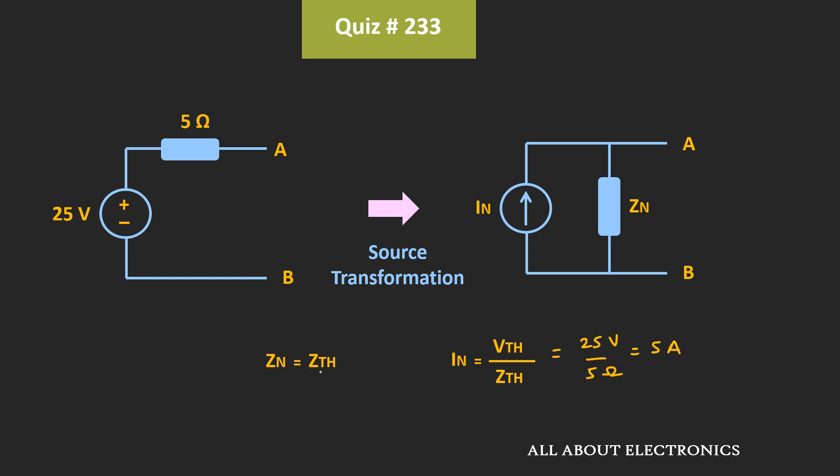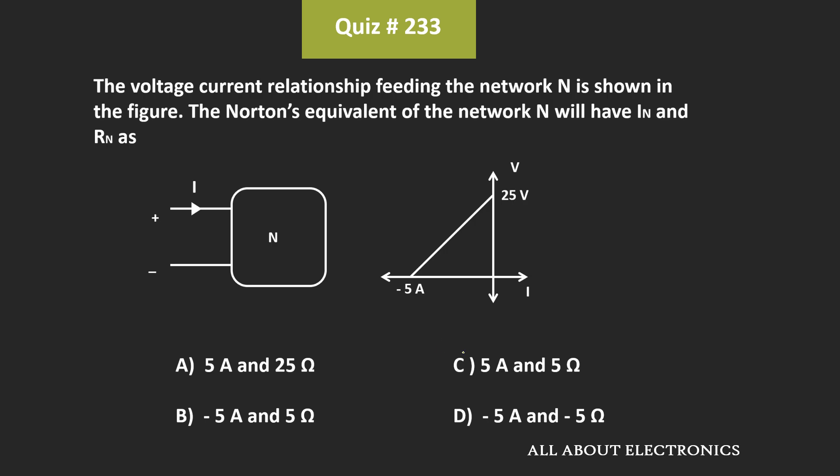That means we can say that the Norton's equivalent resistance is equal to 5Ω, while the Norton's equivalent current is equal to 5A. That means for the given question, C is the correct answer.